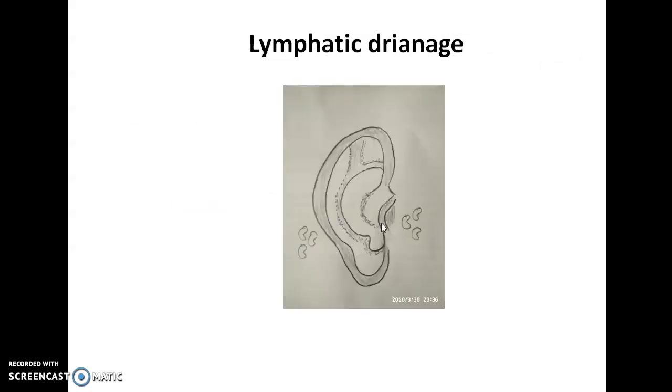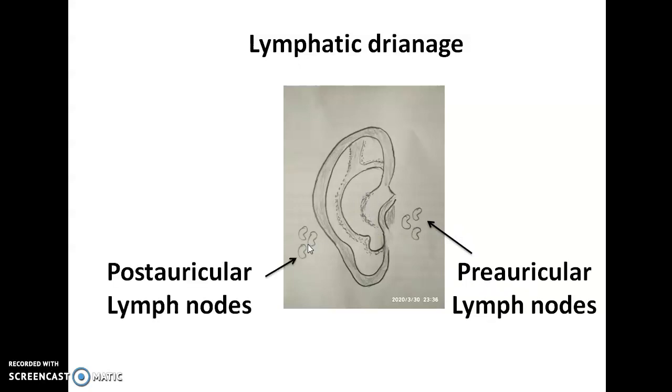Lymphatic drainage in front of the auriculotemporal nerve will be lymph nodes. If there is infection in the anterior wall of the external auditory canal, it will go to these lymph nodes called preauricular lymph nodes. Behind, the posterior part of the external auditory canal drains into the postauricular group of lymph nodes.